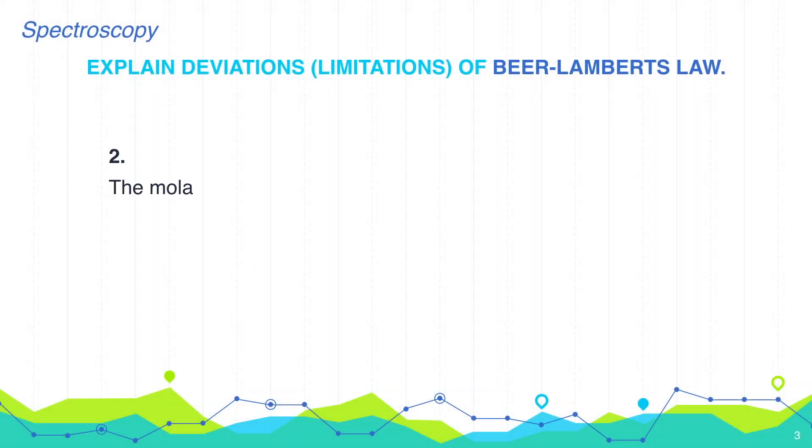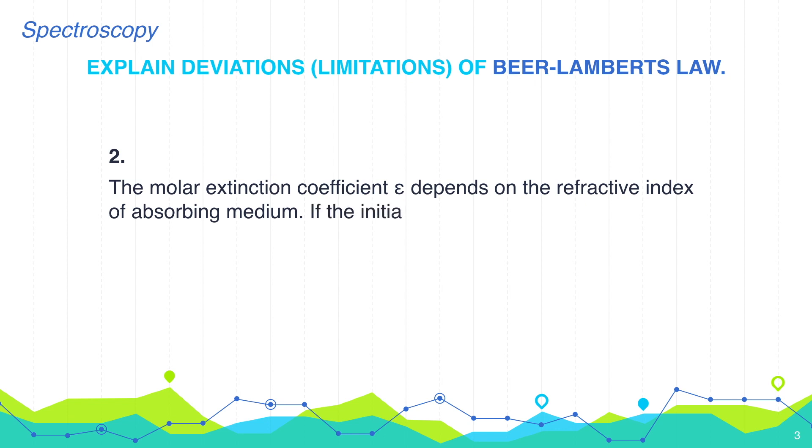Second, the molar extinction coefficient epsilon depends on the refractive index of absorbing medium. If the initial concentration of the absorbing medium is greater than 10 to the power minus 2 molar, then refractive index changes and so epsilon changes.